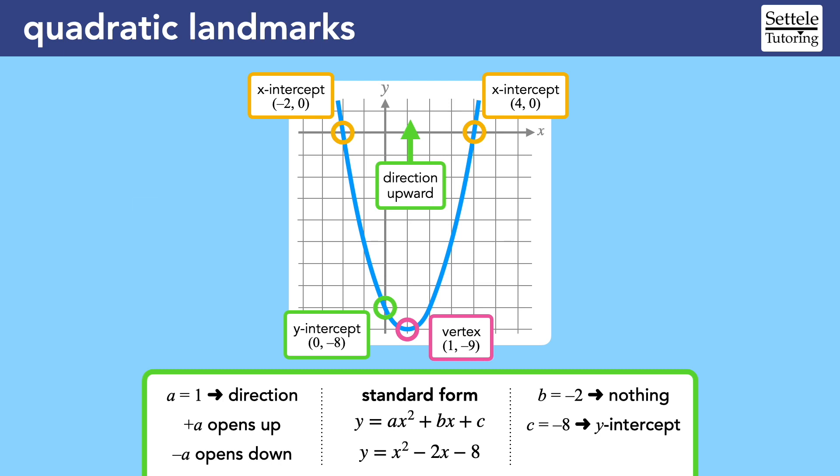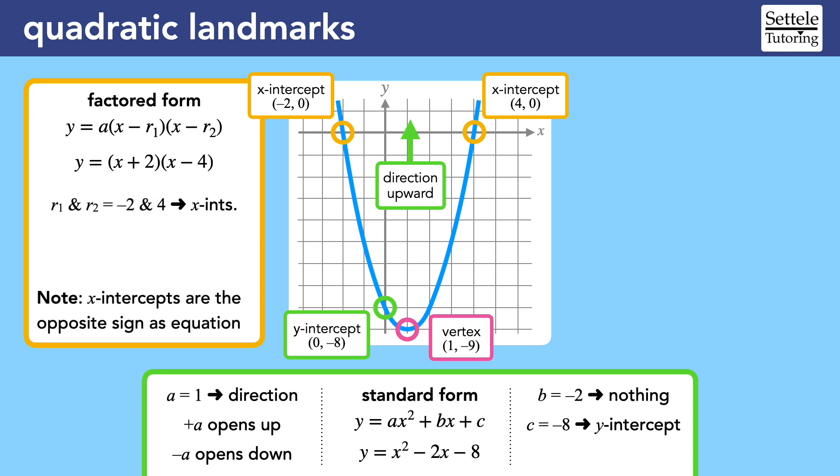You are also probably familiar with factored form, which tells us the x-intercepts of the parabola. Each parenthesis term is a mini equation that we can set equal to zero and solve for x. In most cases, the x-intercept will simply be the opposite sign of the number in the parentheses. If there's a number outside the parentheses, it's the same a that we saw in standard form, so it will tell us the direction of the parabola. This quadratic has no visible a, because we already saw that a is equal to 1.